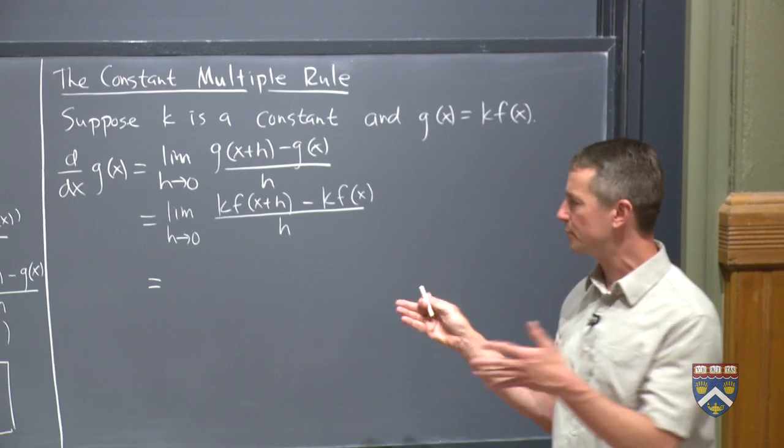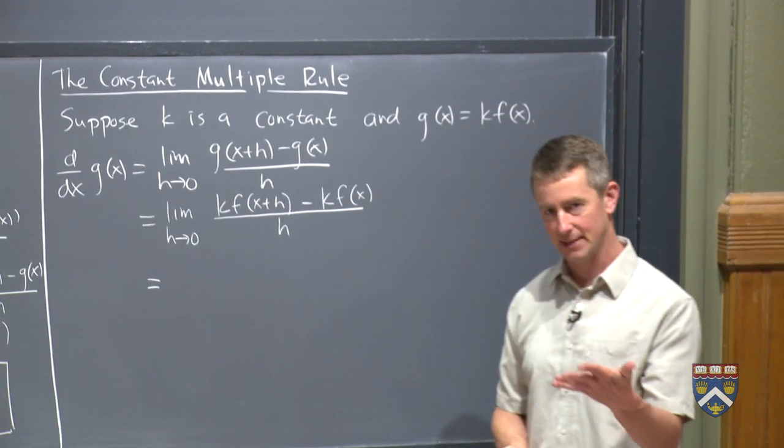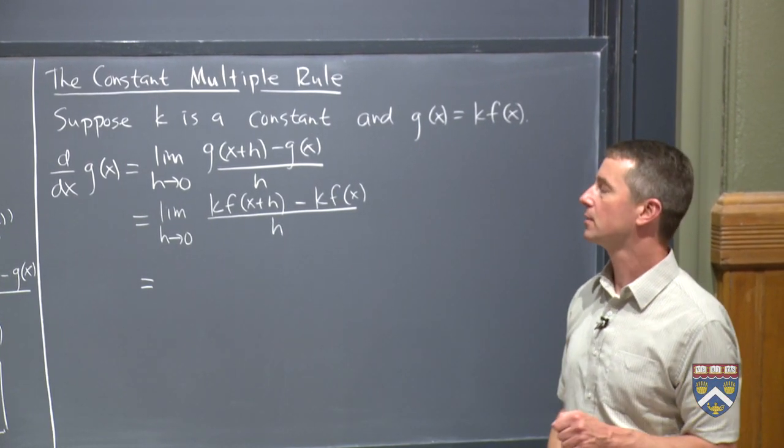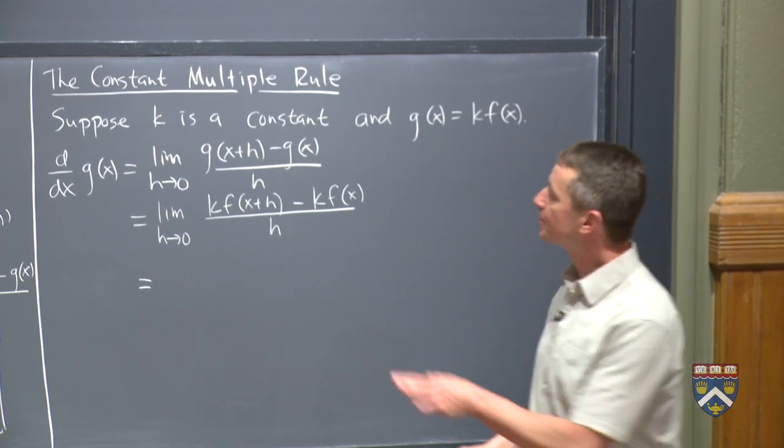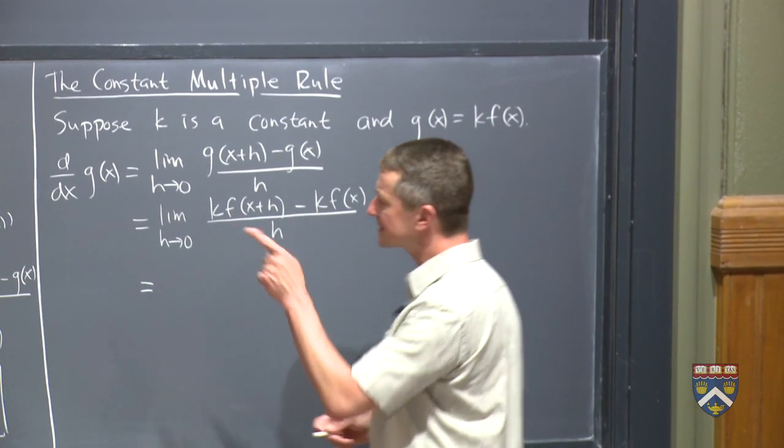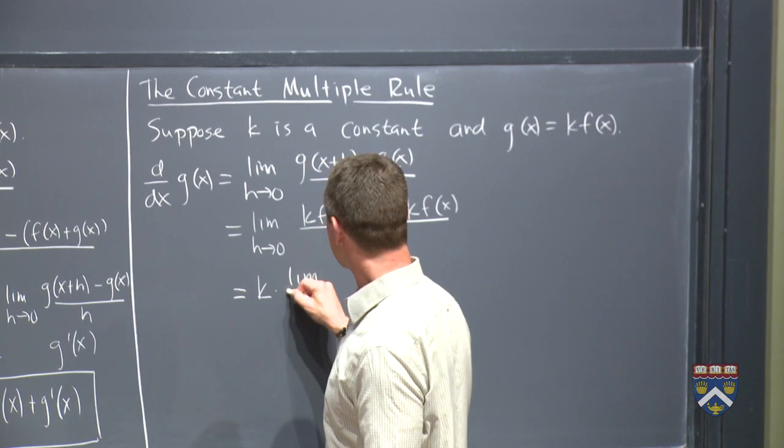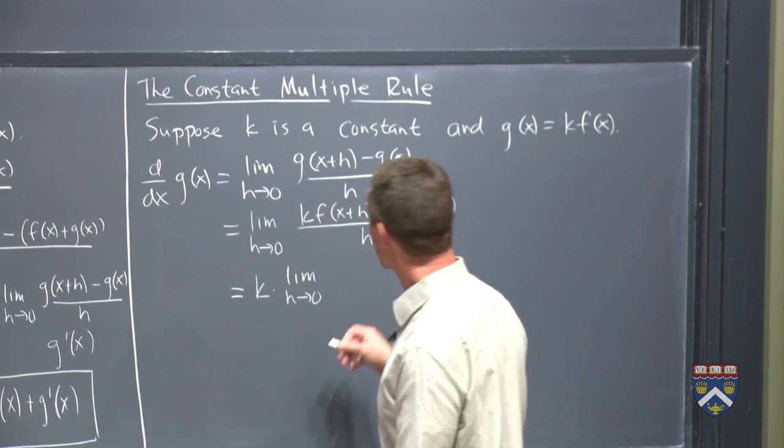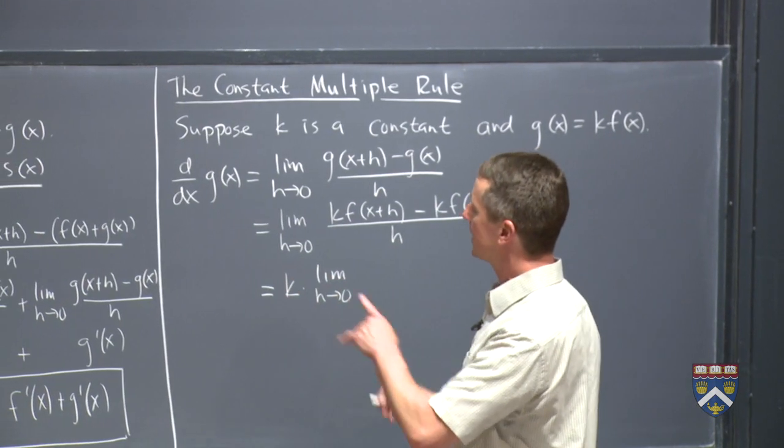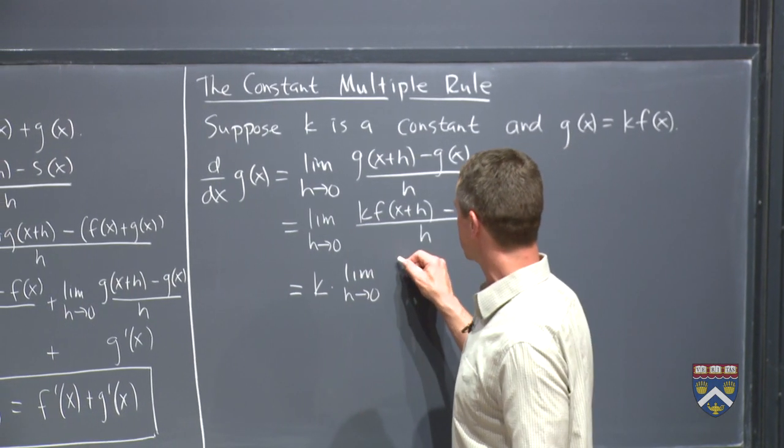Again, this is a limit property which I hope seems reasonable to you. If you want to see a formal proof of it, you have to look at the graduate credit stuff. But we can pull this constant k out front of this limit as h goes to zero. Because whether I multiply by five on the inside or the outside, it's not affected by h going to zero.